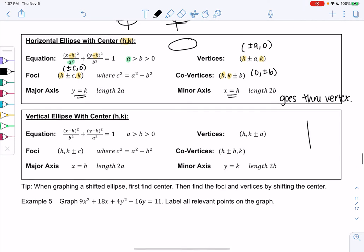And then similar with vertical, we still have the same HK center. But now the Y squared term gets the A squared. Otherwise, nothing really changes. The vertices change. It's zero plus or minus A rather than plus or minus A zero. And again, they get shifted. So let's check out an example, and you can see how the vertex is just shifting all the previous definitions.